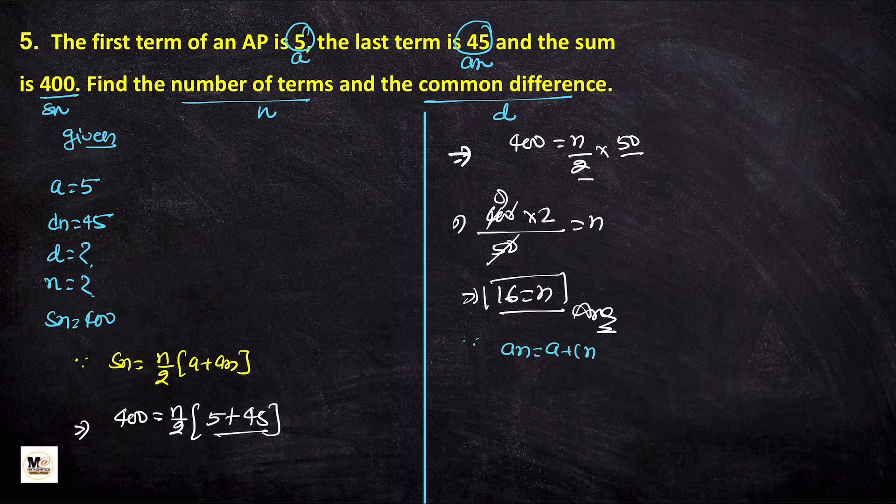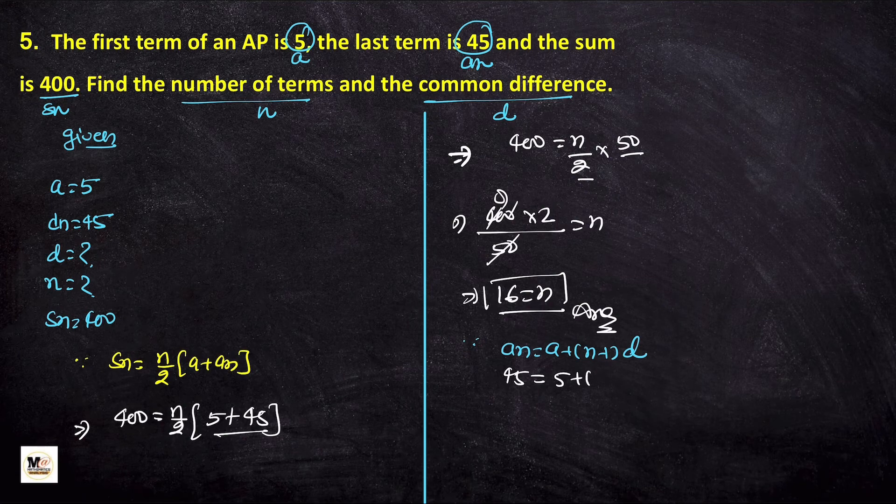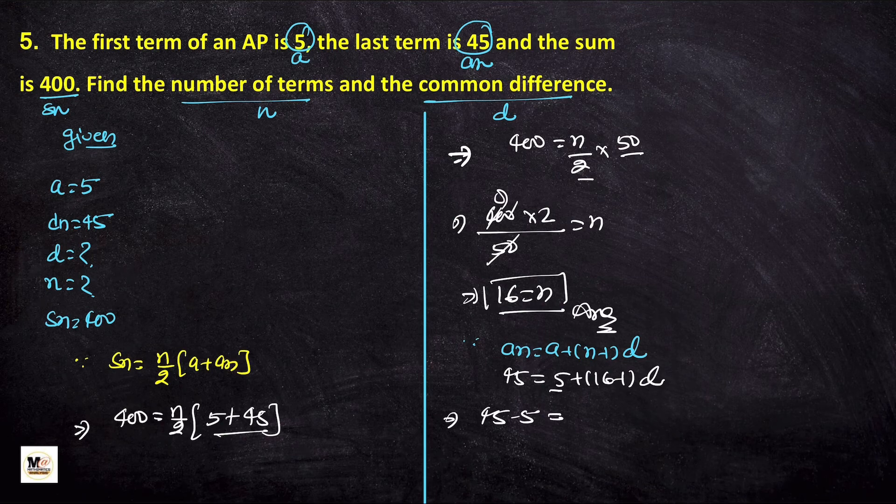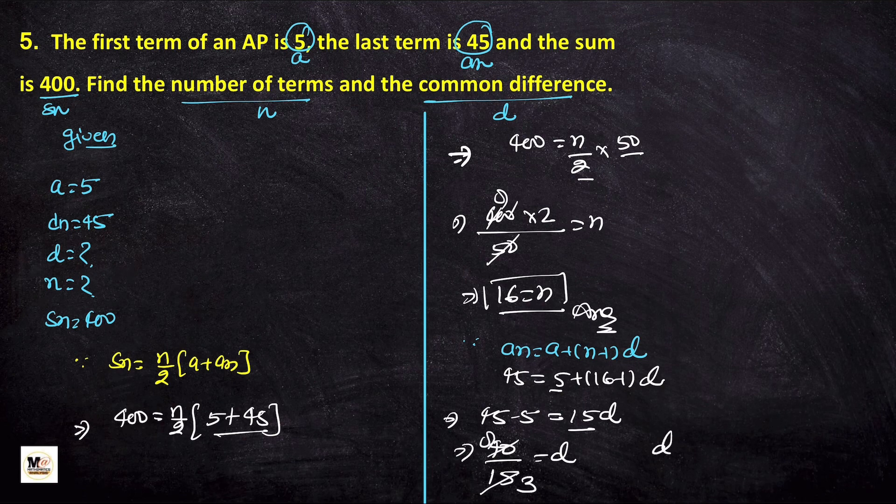We have an equals 45, a equals 5, and n equals 16. Substituting: 45 equals 5 plus (16 minus 1) times d. This gives us 40 equals 15d. Dividing, we get d equals 40 over 15, which simplifies to 8 over 3. So the value of d is 8 upon 3.